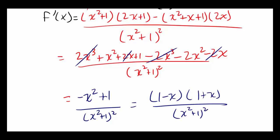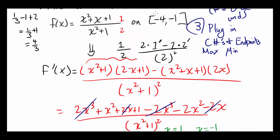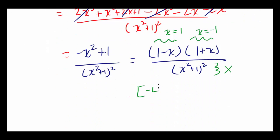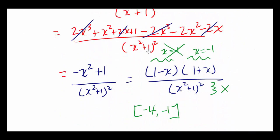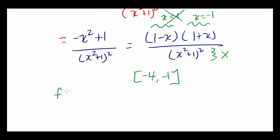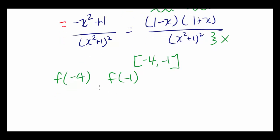Critical numbers occur when f prime is 0 or undefined. f prime is 0 when x = 1 or x = -1. f prime is undefined when the denominator is 0, but since x² + 1 is always positive, there are no such critical numbers. Our interval is [-4, -1], so x = 1 is not in the interval — we only count x = -1. We evaluate f at x = -4 and x = -1.